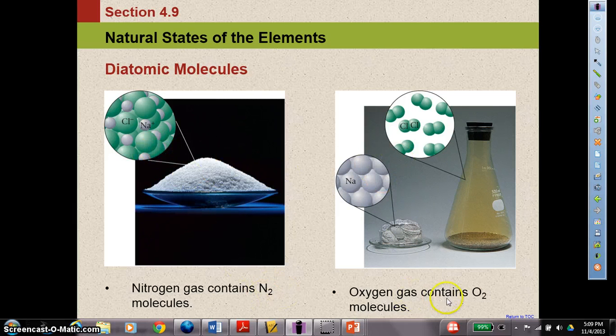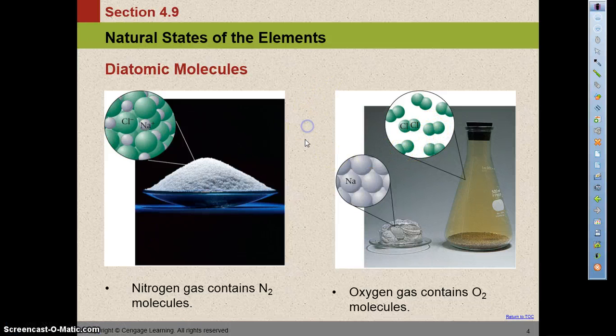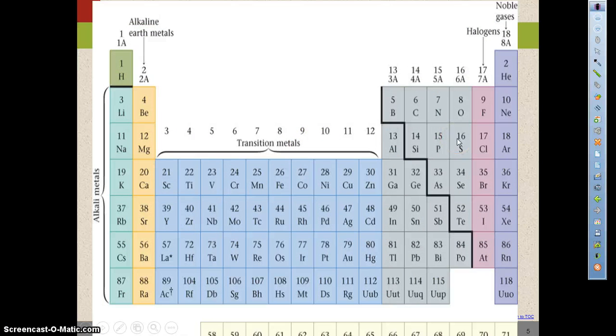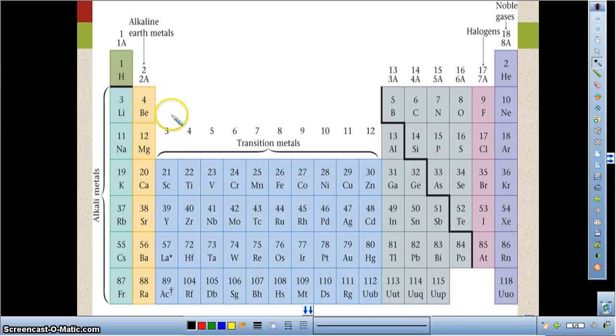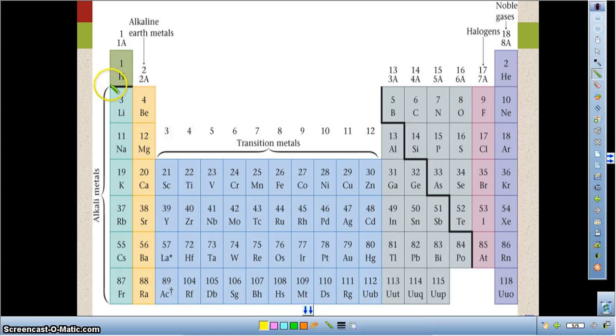So nitrogen gas, oxygen gas, chlorine gas, those are three examples of diatomic molecules. I want to point out the other ones on the periodic table to you. I like to call these the Magnificent Seven, and if you look at the pattern, I think it'll be easy for you to see how you can keep them separate.